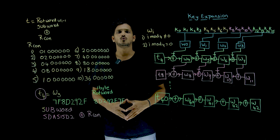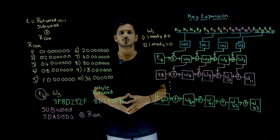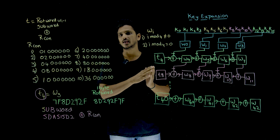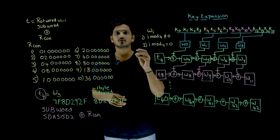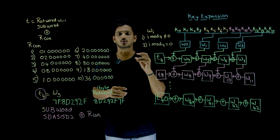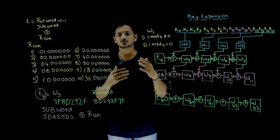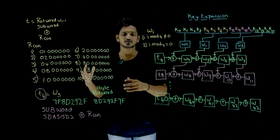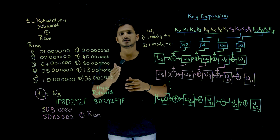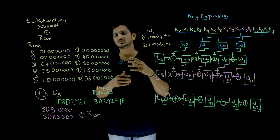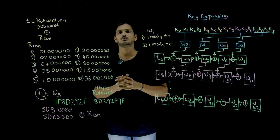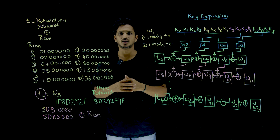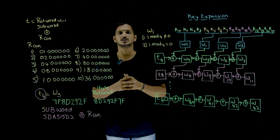Hi, welcome to Learning Monkey. I am Raghu here. In this class we will discuss about key expansion in AES. This is a bit confusing to understand, so you have to concentrate for better understanding. In our previous classes we already discussed about what is the key in AES, what are the rounds, and what happens inside the round. Please watch those classes and come back here. The link for the playlist is provided in the description below.